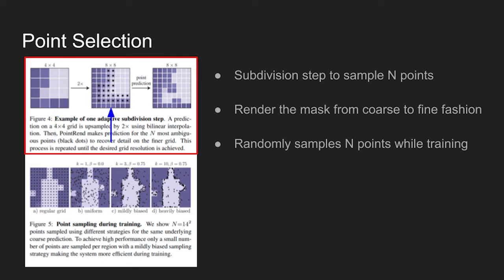In each iteration, PointRend upsamples its previously predicted segmentation using bilinear interpolation, then it selects the N most uncertain points on a larger grid. PointRend then computes the pointwise feature representation for each of these N points and predicts their labels. This process is repeated until the segmentation is upsampled to a desired resolution.